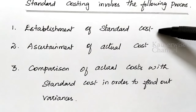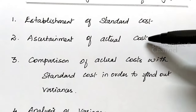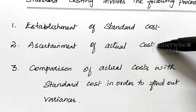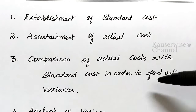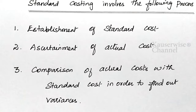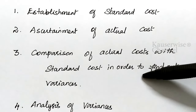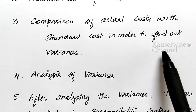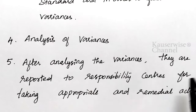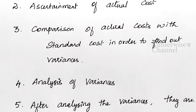Standard costing involves the following five processes. First is the establishment of standard cost — the company needs to establish or fix some standards. Second is ascertainment of actual cost. Third is comparison of actual cost with standard cost in order to find out the variances — either a favorable or unfavorable balance. Fourth is analysis of variance. Fifth, the analyzed variances are reported to the responsibility center for taking appropriate or remedial actions.